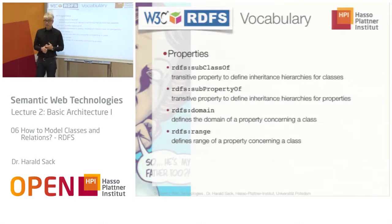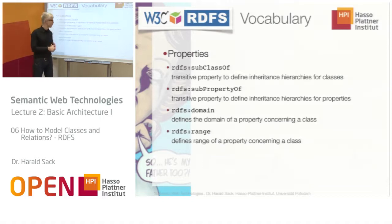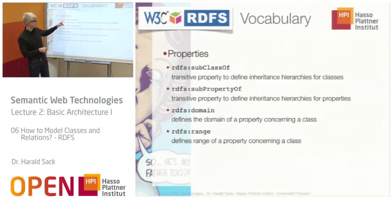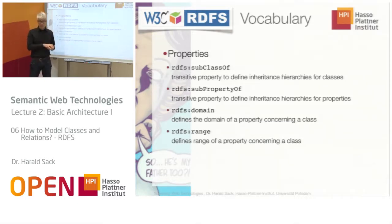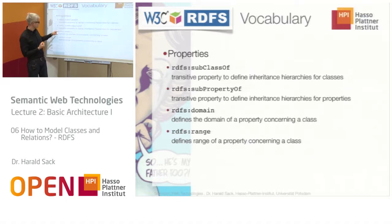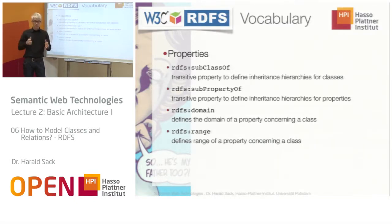We have special predefined properties in RDFS for defining class or property hierarchies: rdfs:subClassOf and rdfs:subPropertyOf, which are transitive properties to define inheritance hierarchies for classes or properties. And if you define a new property, you have to define the domain — the class which is mapped to another class — which is the range. So you have to define rdfs:domain and rdfs:range, which are two properties that relate the property you define to its domain and to its range.